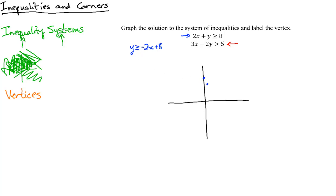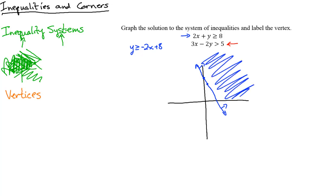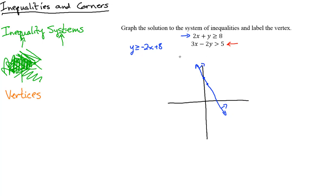The slope is negative 2, y-intercept 8. Since we have an equals sign, this is a solid line. Since y is by itself and the inequality is greater than, we shade above the line. Imagine the entire upper region colored blue. Now let's do the red inequality.